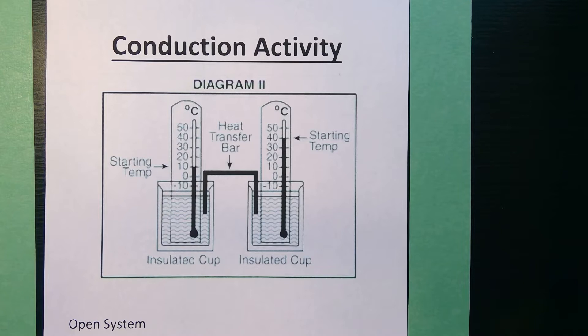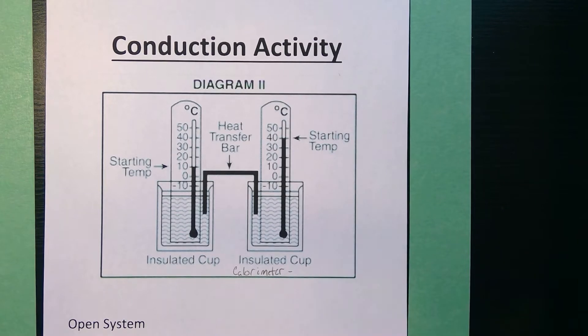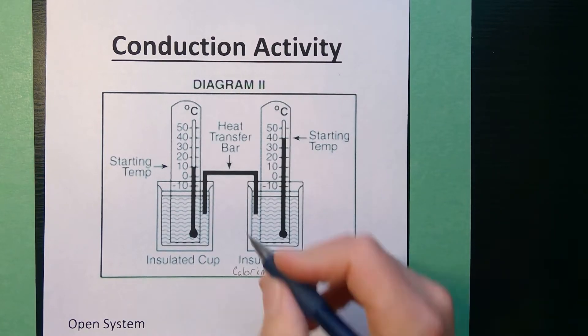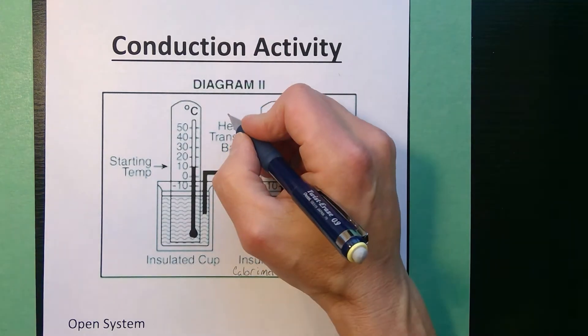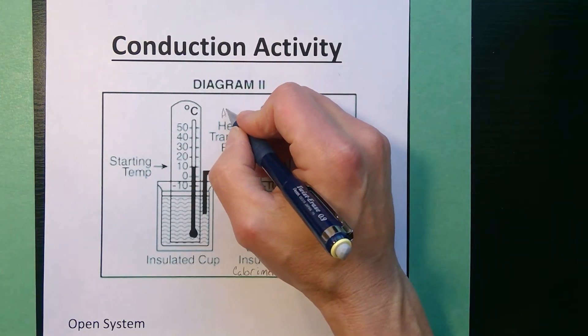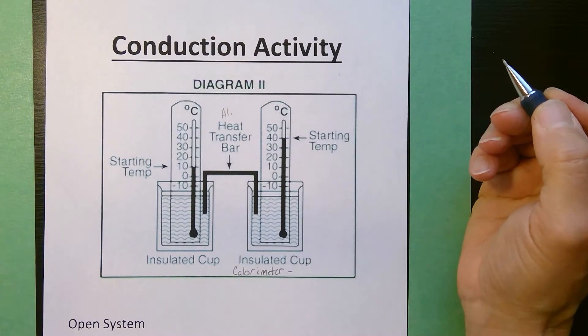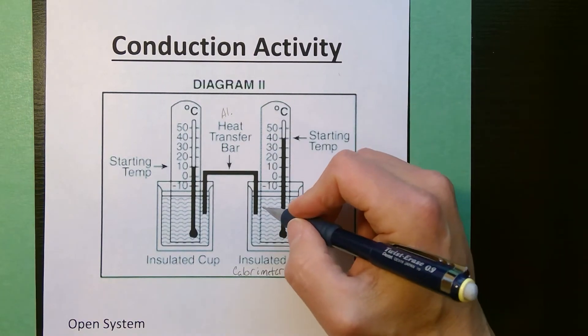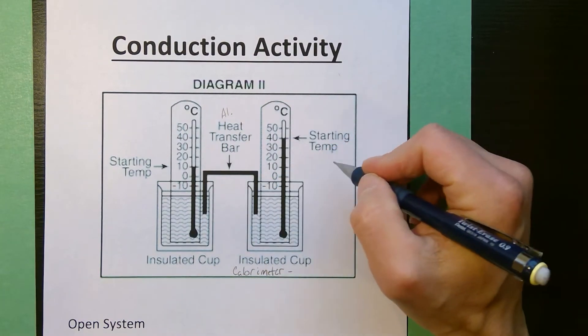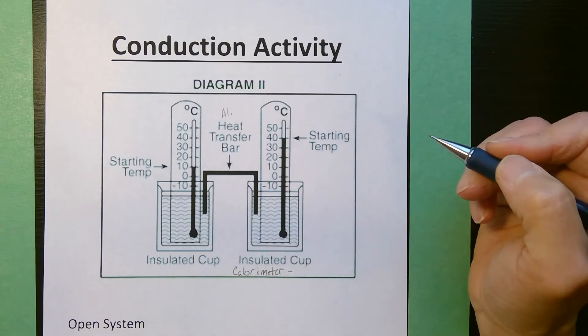You had an instrument that looked similar to this. This is a diagram from the Regents. This instrument is called a calorimeter and it's an instrument that's used to study or investigate heat transfer. You had a heat transfer bar which was made out of aluminum. It's a solid. That's how the heat energy went from the hot cup to the cold cup.